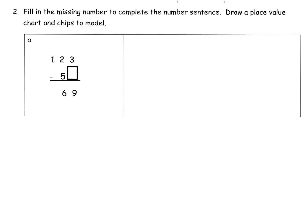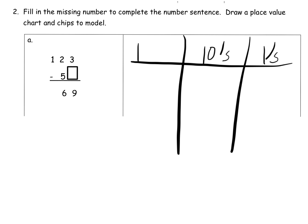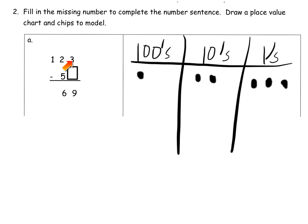The last problem for this video says: fill in the missing number to complete the number sentence. We've got a missing number here, and we're going to use our place value chart to help guide students through this process. We're going to start by drawing our place value chart, and now let's model it — we're going to model 123. Even though it doesn't say we have to unbundle, we're going to use logic to understand that we'll have to unbundle if we're going to subtract and end up with nine.